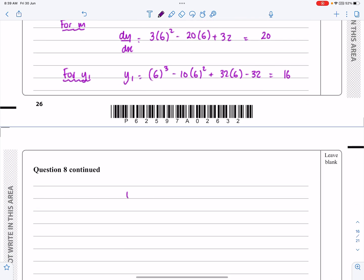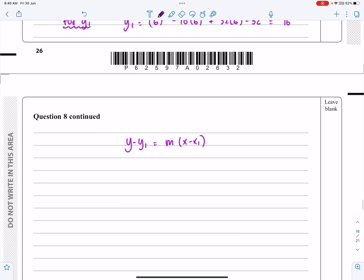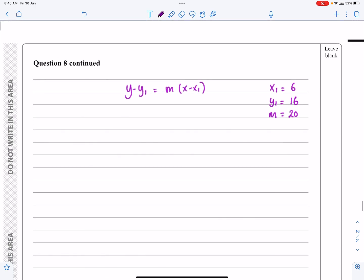So as I say, if I'm going to be using y minus y1 equals m(x - x1), I've got a little method where I always tend to just write down here what those values are, makes it easy for the examiner marking my work to see where my values are coming from, and also just less likely to make a mistake with copying errors if I've got that information written down there as well. Nice little tip.